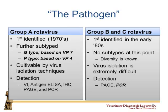Rotavirus A, which is classically known, was first discovered in the 70s. It's very easily grown on cell culture, and we can detect it by multiple ways — IHC, virus isolation, PCR, pull-down, electrophoresis. If you can name it, we can probably detect it for rotavirus A.